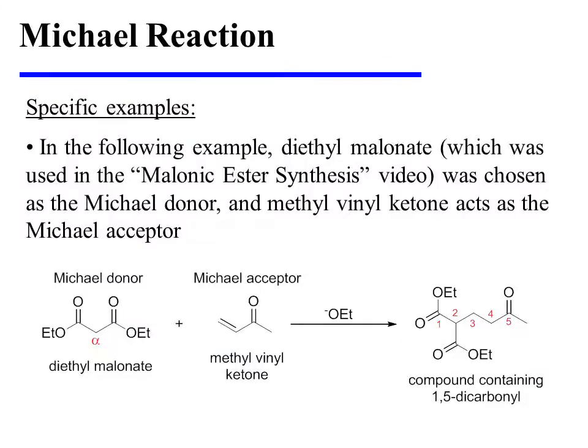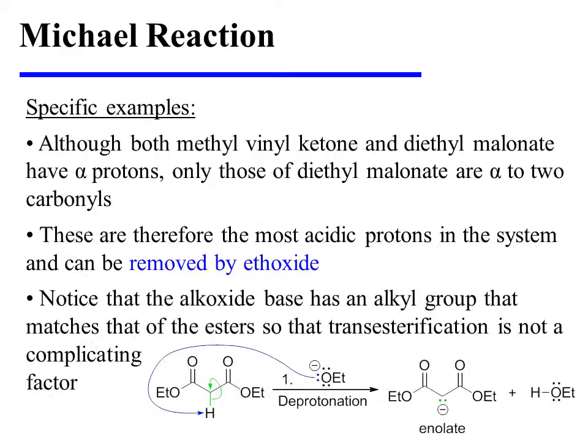Now let's turn our attention to some specific examples. In the following example, diethylmalonate was chosen as the Michael donor, and methyl vinyl ketone acts as the Michael acceptor. Although both methyl vinyl ketone and diethylmalonate have alpha protons, only those of diethylmalonate are alpha to two carbonyls. These are therefore the most acidic protons in the system and can be most readily removed by ethoxide. Notice that the alkoxide base has an alkyl group that matches that of the esters, so that transesterification is not a complicating factor.